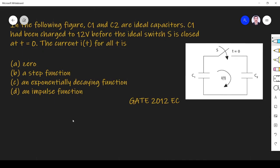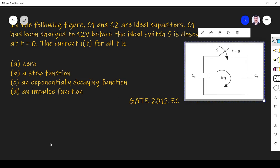Here you see C1 is in the circuit. C1 is charged to VC1. VC1 is 12 volt. V equals 12 volt.